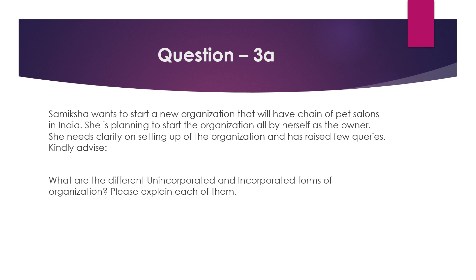Now jumping to Question 3. It has two parts — 3A and 3B. You simply write Answer 3A and then Answer 3B separately. The case study is: Samiksha wants to start a new organization that will be a chain of pet salons in India. She is starting it all by herself as the owner and needs clarity on setting up the organization. Question 3A asks: 'What are the different unincorporated and incorporated forms of organization? Please explain each of them.'